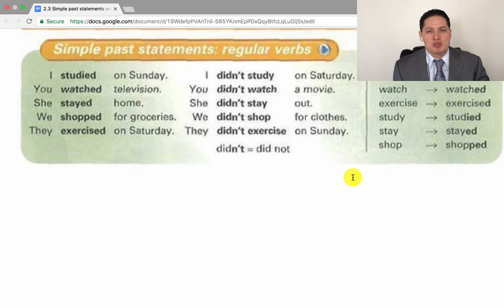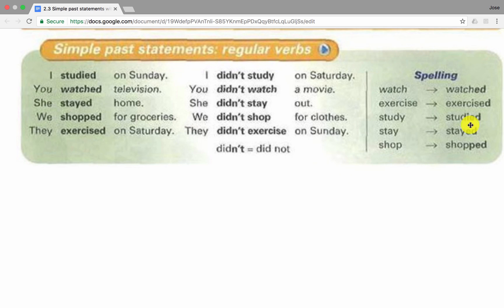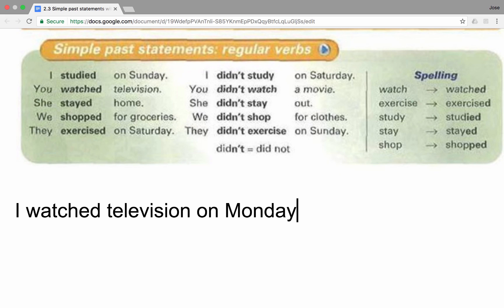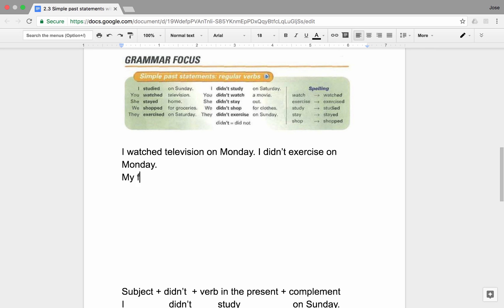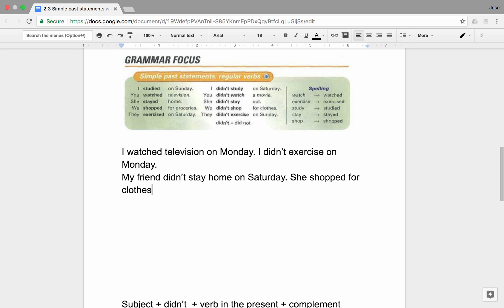Now it's your turn to practice making positive and negative statements in the past tense. I would like for you to use all the verbs on the right-hand side of the chart and provide similar examples about yourself, family, friends, and coworkers. For example: I watched television on Monday. I didn't exercise on Monday. My friend didn't stay home on Saturday. She shopped for clothes. After you finish this activity, share your work in our discussion forums.